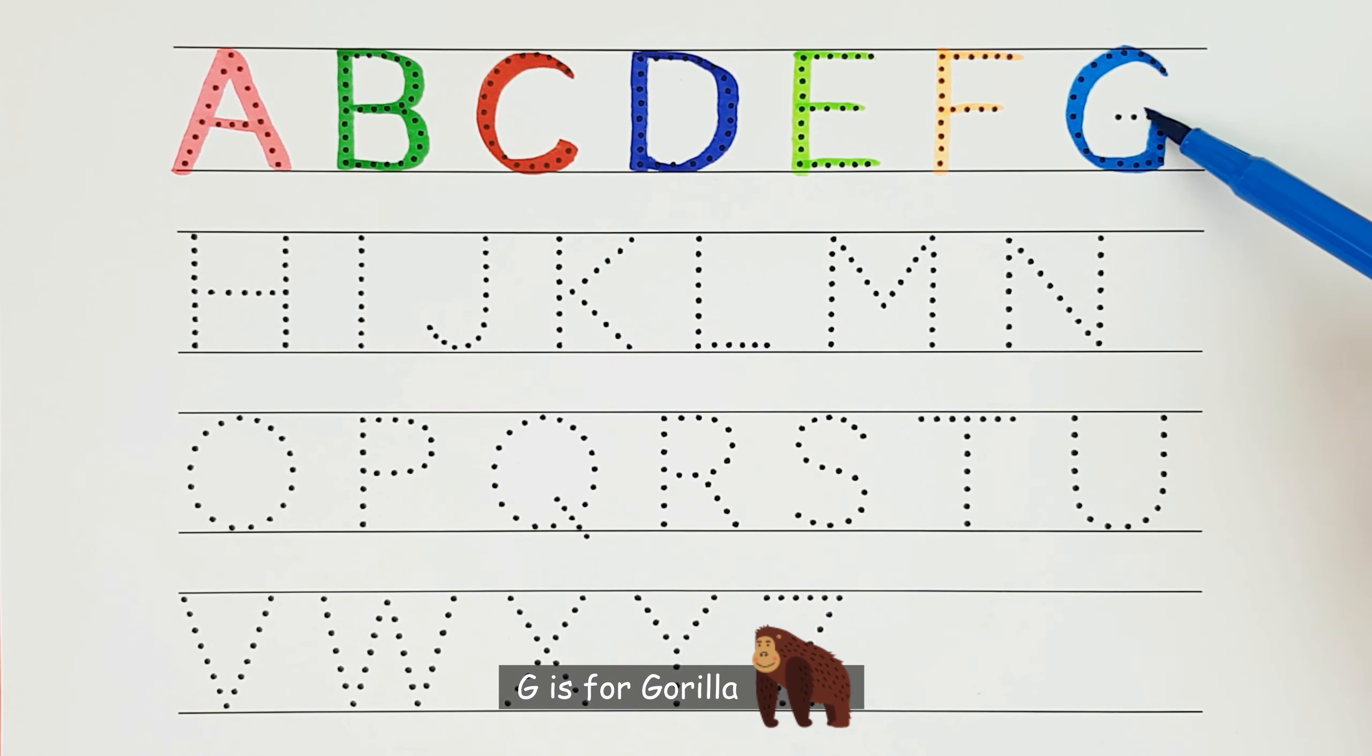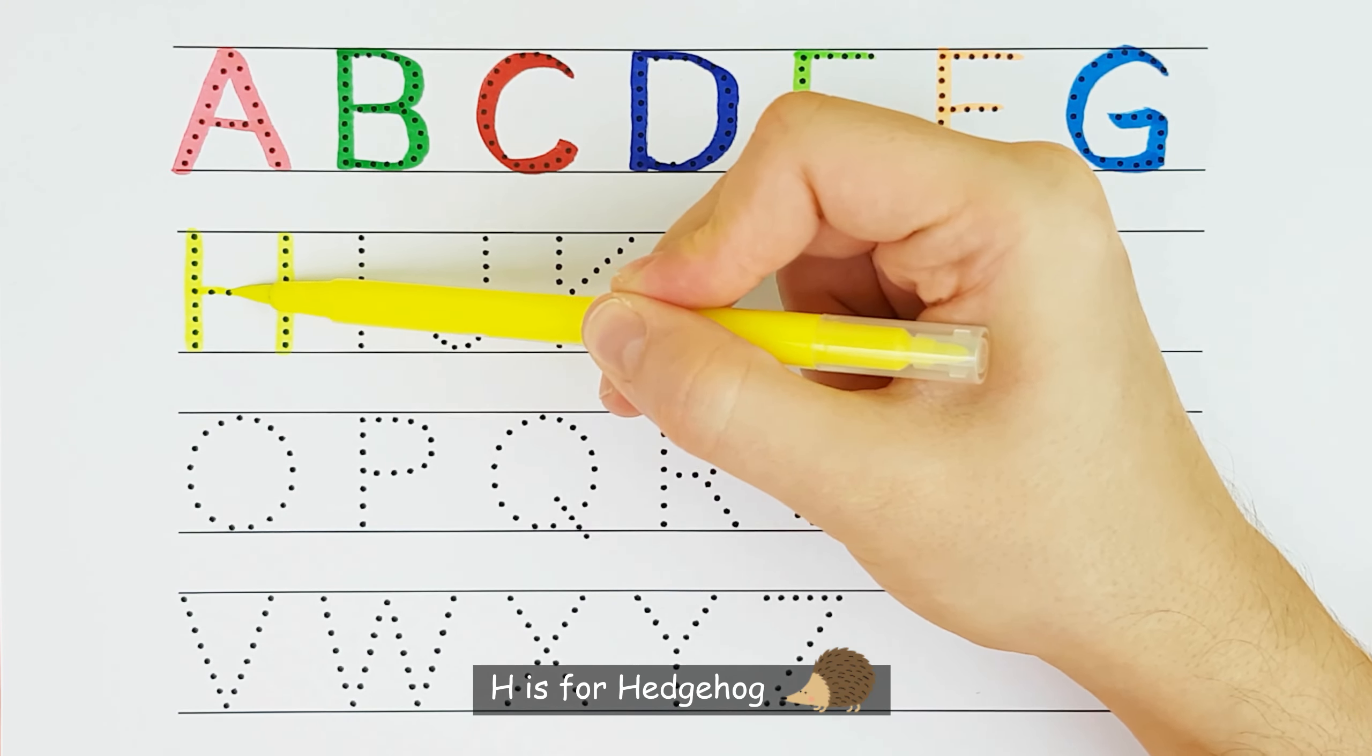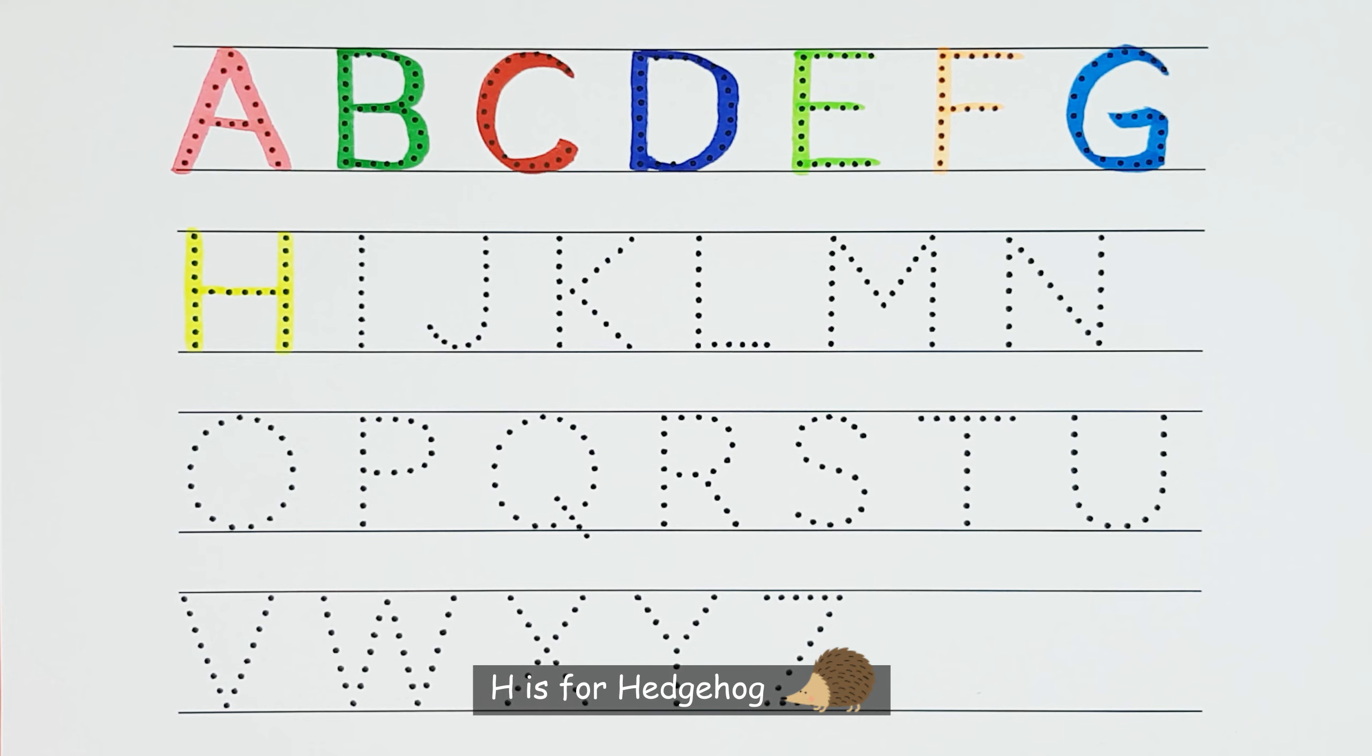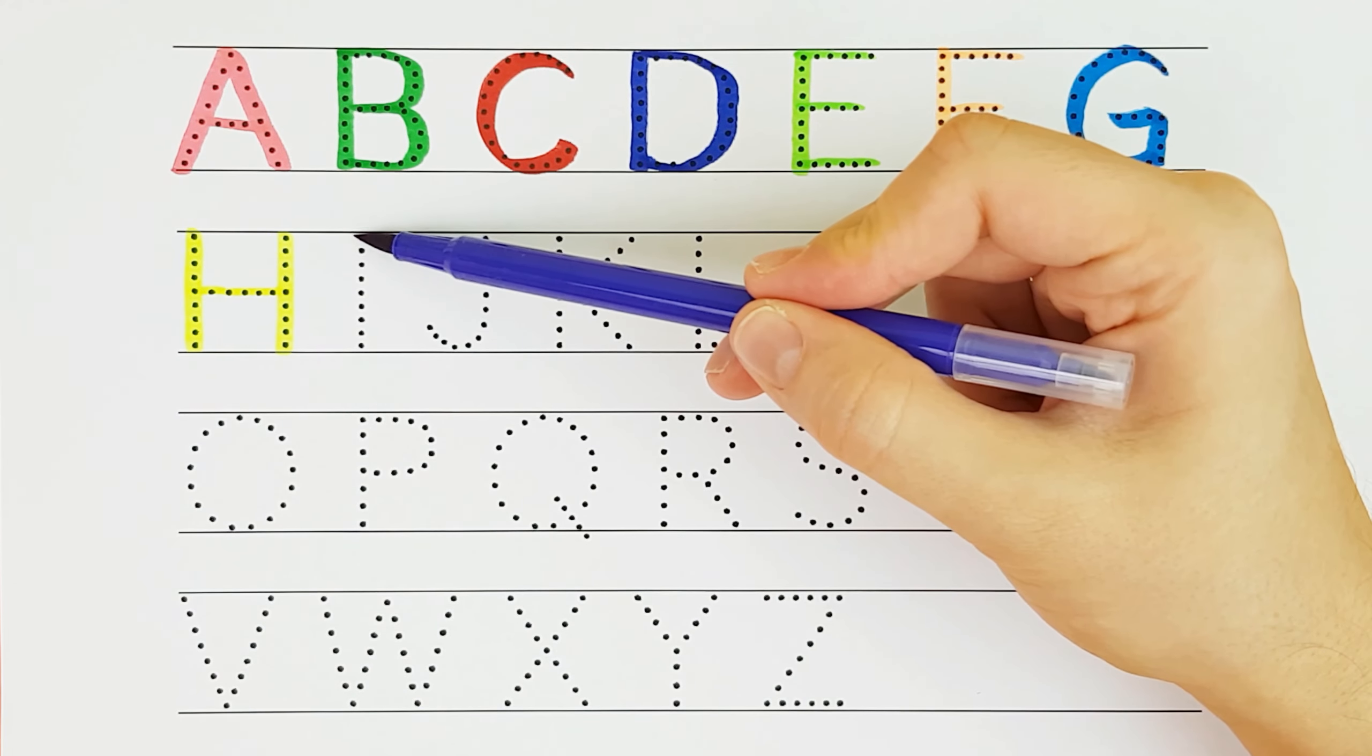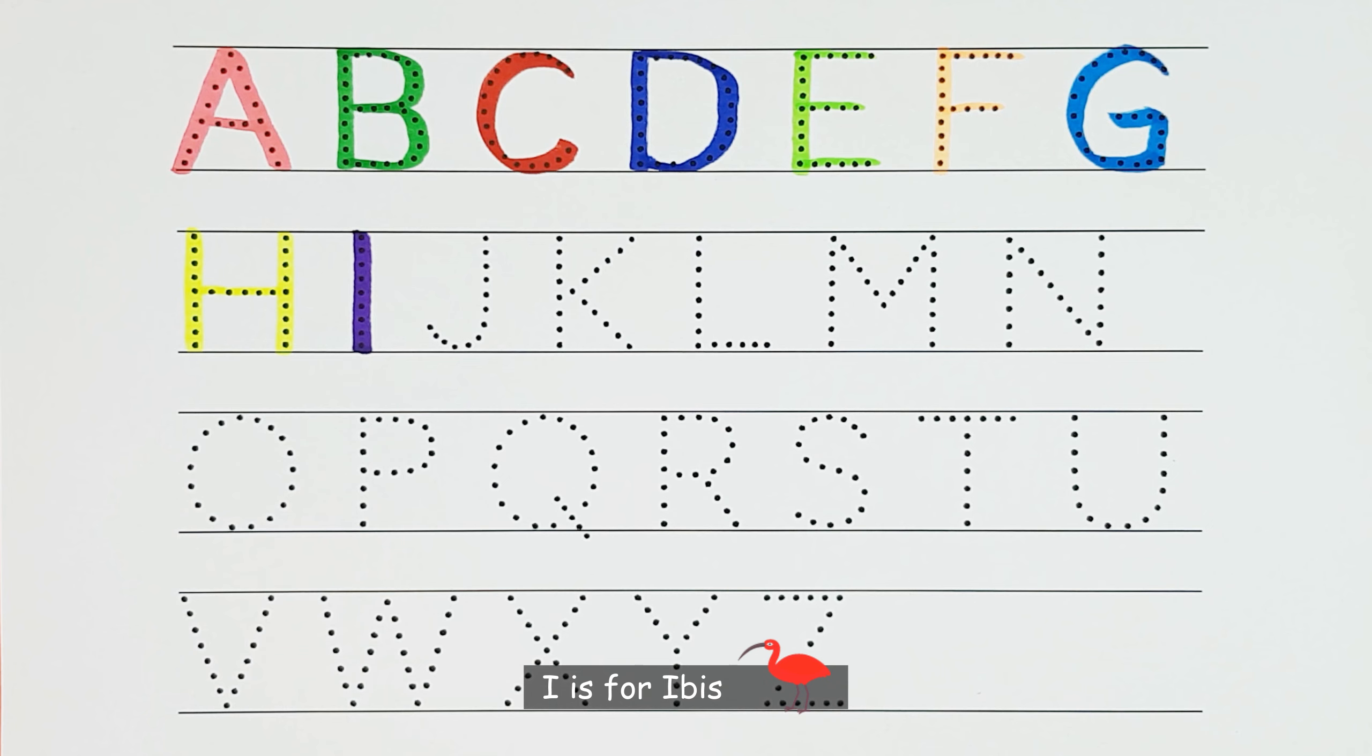G. G is for gorilla. G. H. H is for hedgehog. H. I. I is for ibis. I.